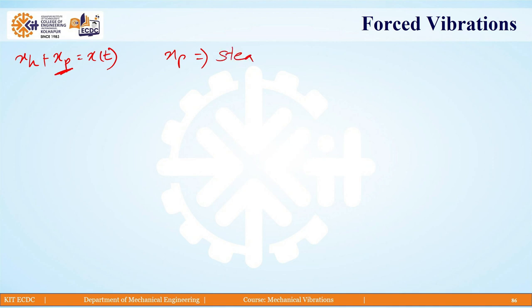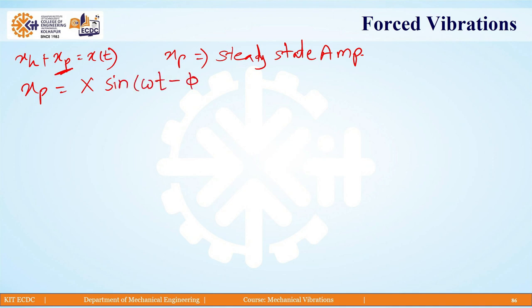What is the meaning of steady state amplitude? The amplitude of vibration is not going to decay — it is going to remain as it is. For this, we are assuming a solution xp as capital X into sine of (omega t minus phi), where X is the amplitude of vibration, omega is the excitation frequency, and phi is the phase angle.